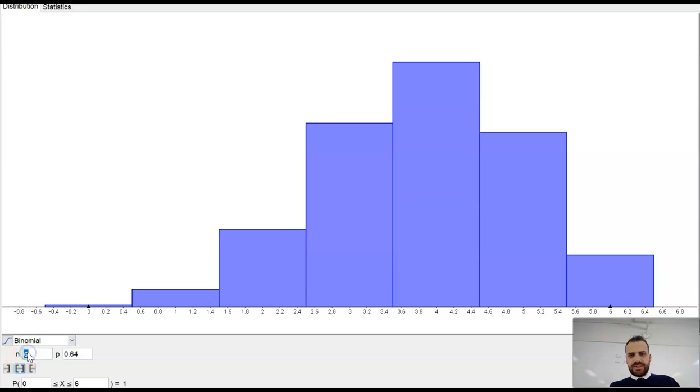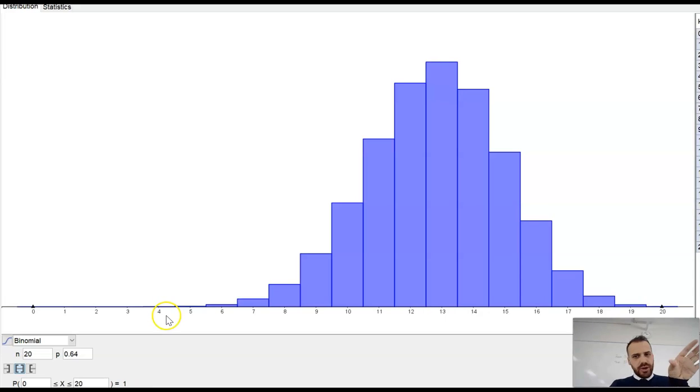Let's change it to like 20, 20 trials. Now hopefully you're starting to see that it's sort of curving up here and it's not symmetrical, but it looks pretty close to being symmetrical.